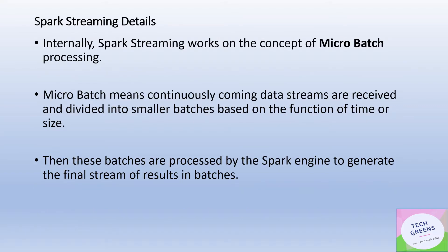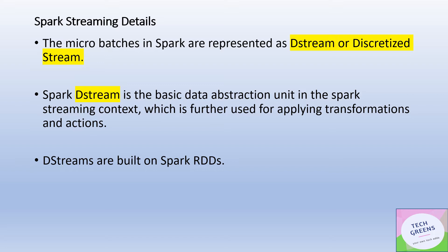Apache Spark Streaming works on the concept of micro-batch processing. As data is continuously flowing into the system, Spark divides it into smaller pieces, and those smaller pieces are then further processed. This whole concept of dividing data into smaller pieces is called micro-batching. In the Spark Streaming world, these batches are processed individually and then the processing results are aggregated to produce the result of the final stream. This is how Apache Spark Streaming differs from other stream processing engines like Storm.